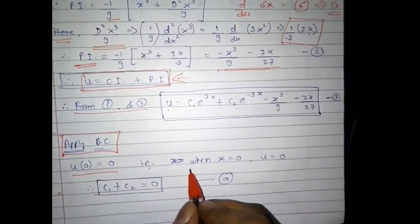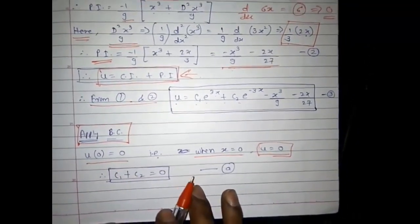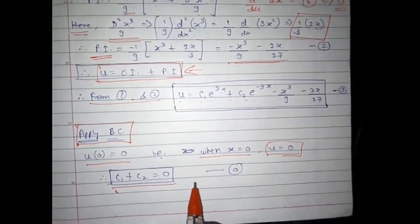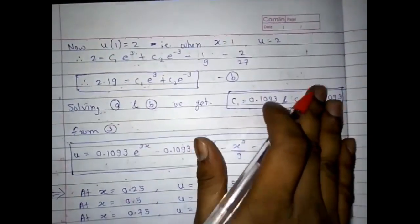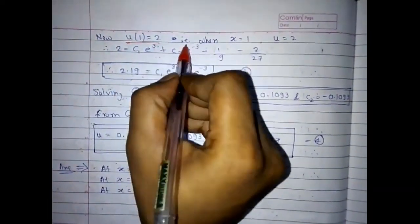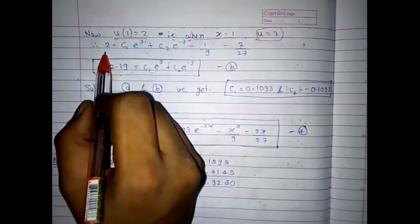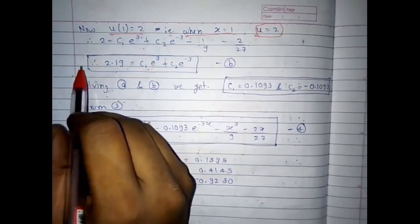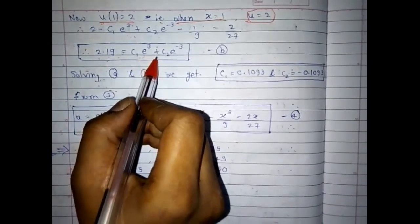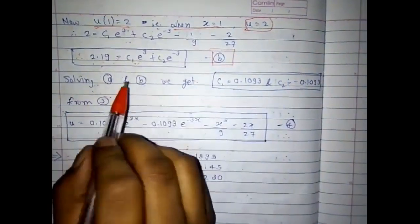Applying the first boundary condition u(0) = 0: when x = 0, u = 0. Substituting gives c₁ + c₂ = 0 — call this equation A. Applying the second boundary condition u(1) = 2: when x = 1, u = 2. Substituting gives 2.19 = c₁e³ + c₂e^(-3) — call this equation B.